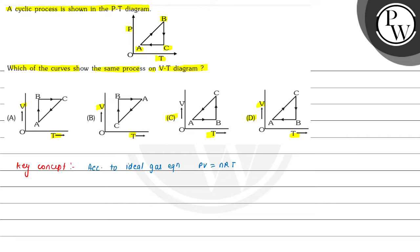From A to B, we can see that in the A to B process, pressure and temperature both increase. That means volume is equal to constant.